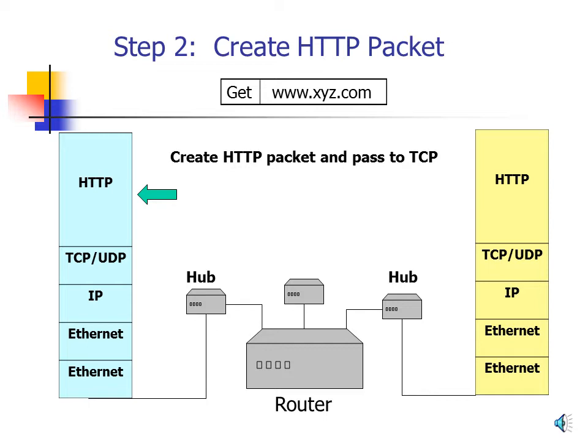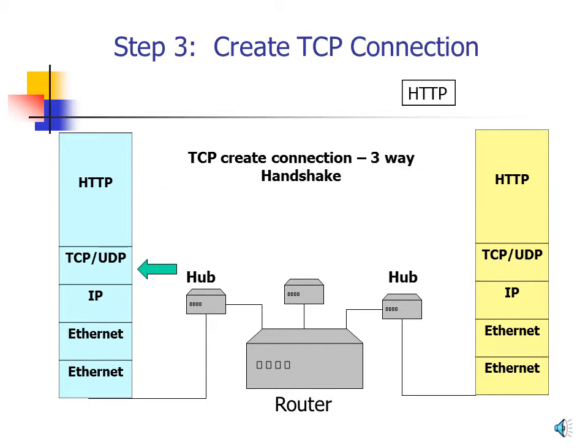Step 3: Create the TCP Connection. The web browser has created an HTTP GET packet for the home page and handed it to the TCP program. But before TCP can send that request, it must create a TCP connection via a three-way handshake. The client sends a TCP SYN packet requesting a connection; the server responds with a SYN-ACK acknowledging and providing its own connection data; and then the client sends an ACK as the third packet. Once this three-way handshake is complete, the client can begin transferring data.